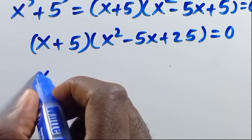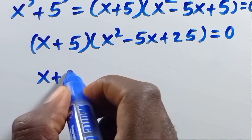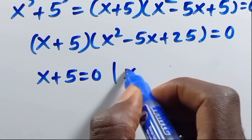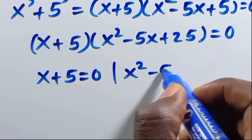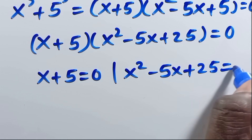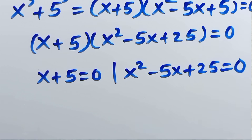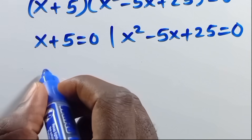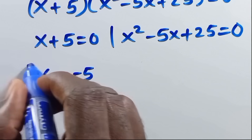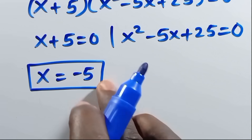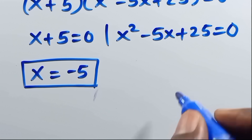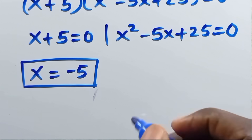From here, we can have x plus 5 equals 0, and x squared minus 5x plus 25 equals 0. Then obviously, x equals minus 5 from the first factor. This is the first real solution.